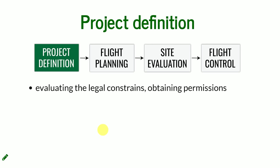The next thing is evaluating the legal constraints — checking if you are even able to plan flying there and obtaining permissions. It is useful to do it during the first assessment of the terrain, but after you plan the exact area you want to fly over, you need to make sure about things like property of the terrain and what kind of permissions you need to obtain in order to fly there. This step is overlooked a lot of the time.